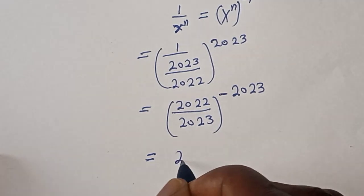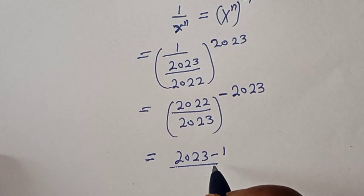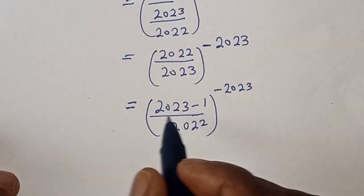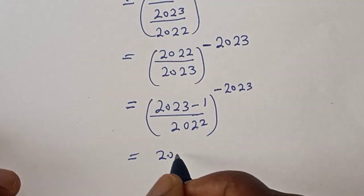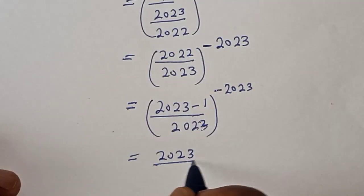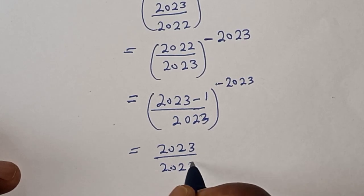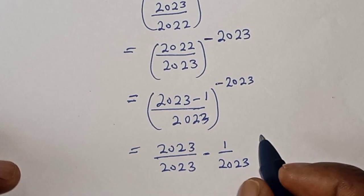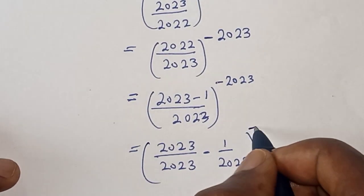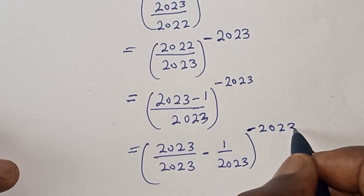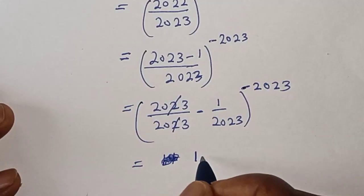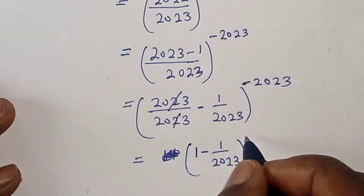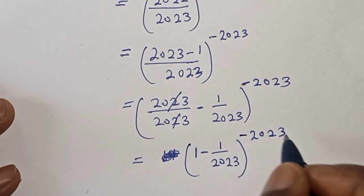Note that 2022 = 2023 minus 1. So we have (2023 - 1)/2023 all to the power of minus 2023. Splitting this fraction, we get (2023/2023 minus 1/2023) to the power of minus 2023, which is (1 - 1/2023) to the power of minus 2023.